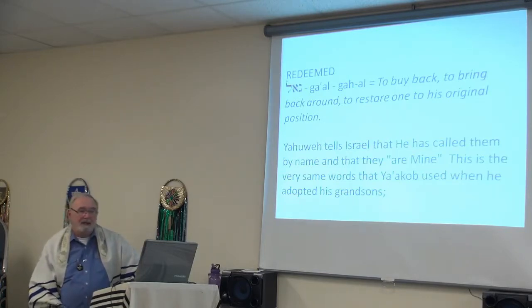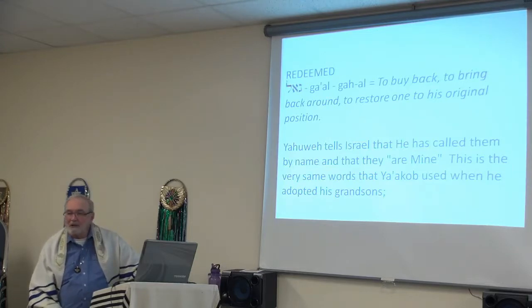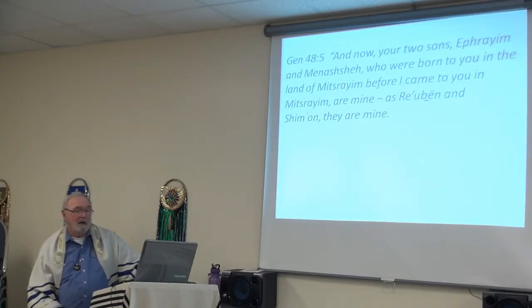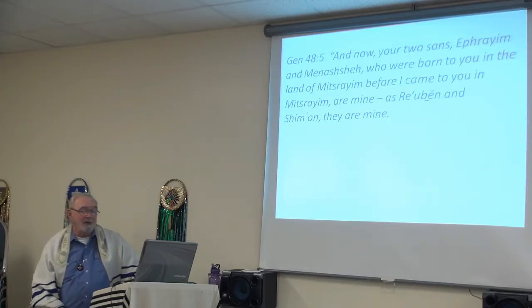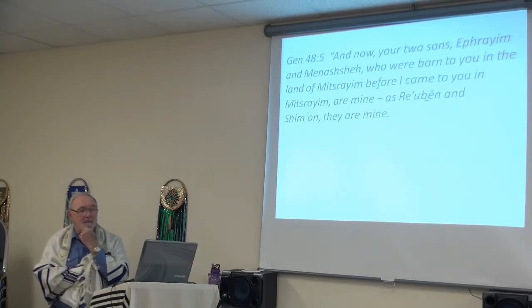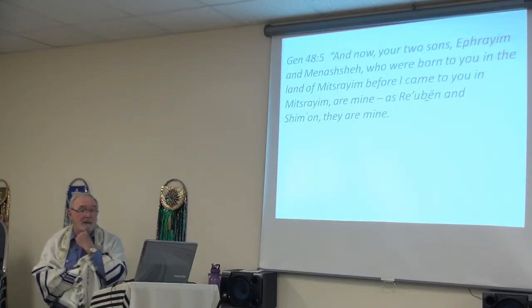Yahweh tells Israel in verse 1 that He has called them by name and that they are His. This is the very same words Yaakov used when he adopted his grandsons. In Bereshit chapter 48 verse 5 it's recorded: 'Now your two sons Ephraim and Manasseh, who were born to you in the land of Mitzurim before I came to you, are mine as Reuben and Simon are mine.' Were Ephraim and Manasseh Jewish? No. They were not. They were both born of an Egyptian mother.